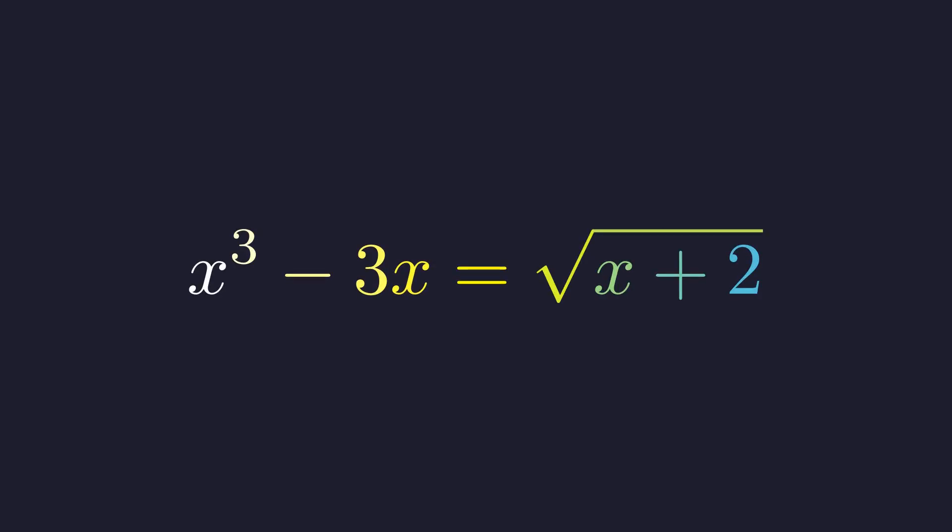Here's a problem that initially looks like straightforward algebra, but it's hiding something beautiful. The solutions to x cubed minus 3x equals the square root of x plus 2 turn out to have a deep connection to the golden ratio. Let's see why.